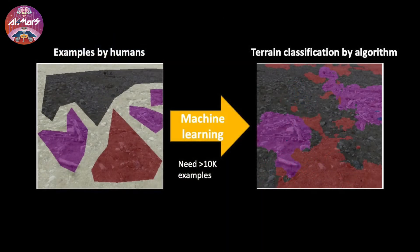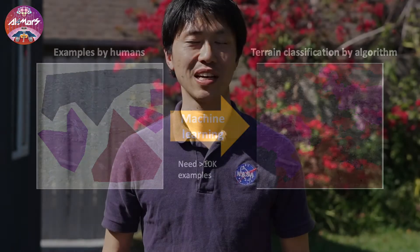But this algorithm will be based on machine learning, meaning that it has to learn from examples by humans. That's why I need your help to create such examples, teaching the rover how to drive safely on Mars.